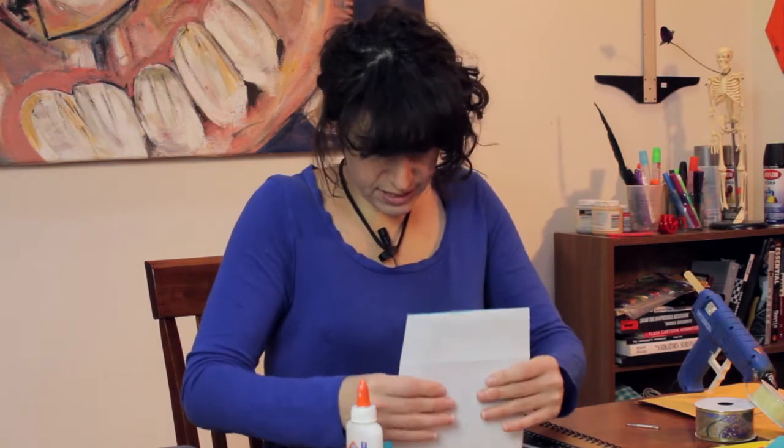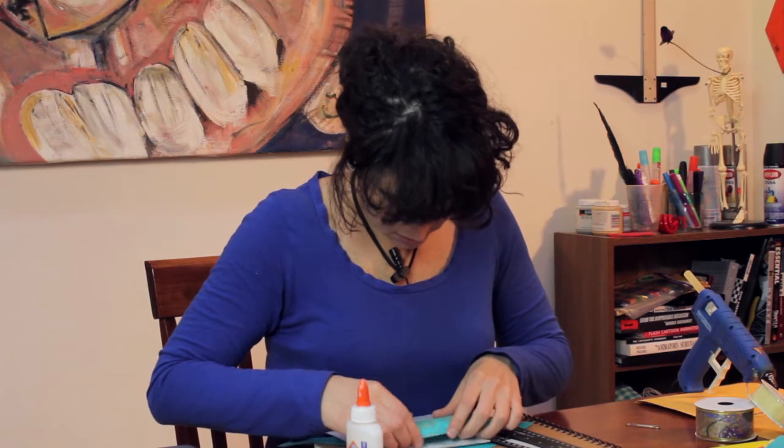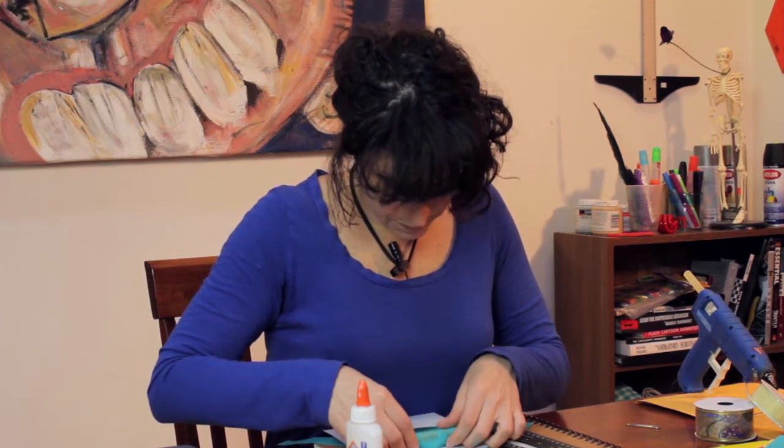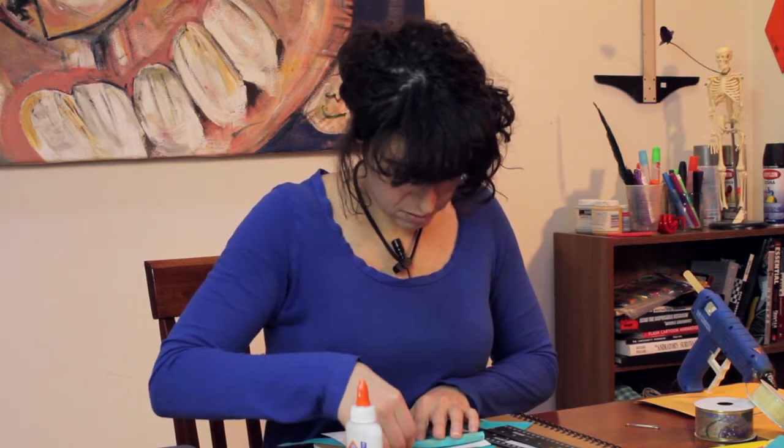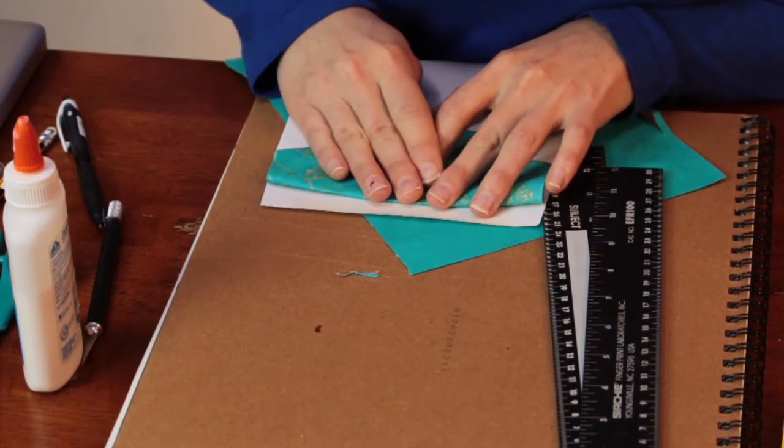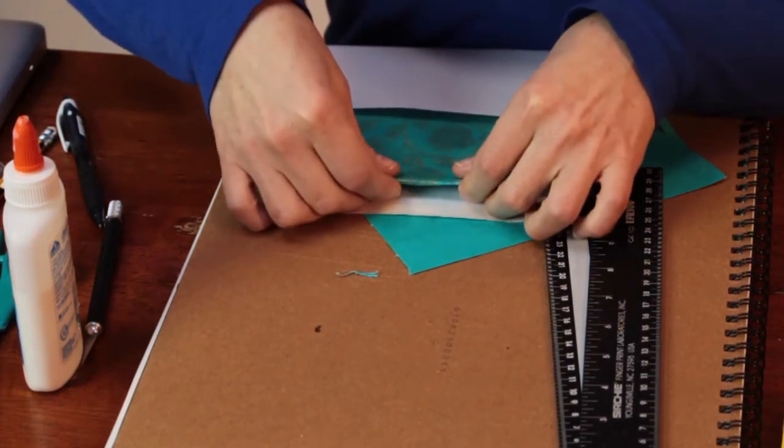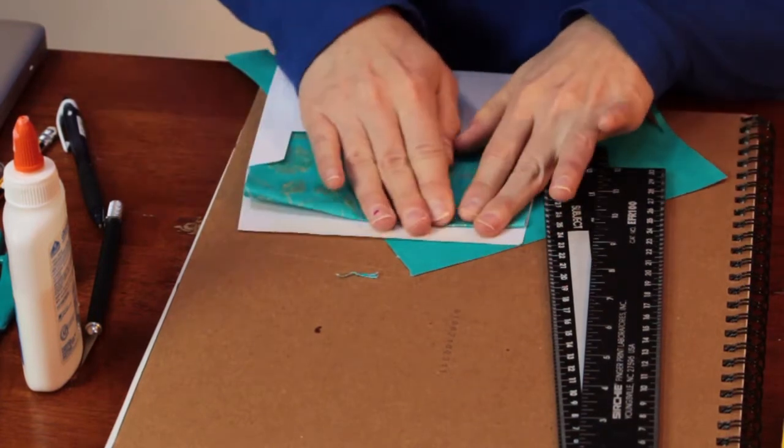So slide it all the way down, and then I'm going to fold back the top until it sits right underneath the adhesive, so that I'm not really messing with the envelope's functionality.